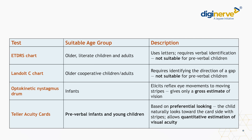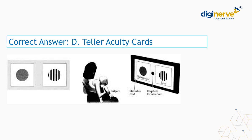The optokinetic nystagmus drum is ideal for infants as it elicits reflex eye movement to moving stripes and gives only a gross estimate of vision. Teller acuity cards are best for pre-verbal infants and young children as they are based on preferential looking — the child naturally looks towards the card side with stripes, allowing quantitative estimation of visual acuity. The correct answer is D, Teller acuity charts. Here we have a small pre-verbal child sitting in the lap of the mother and the examiner is looking through a peephole, while the child is shown a card with stripes and a card without stripes. Preferentially the child will look at the patterned image, which gives us an idea regarding the visual acuity.